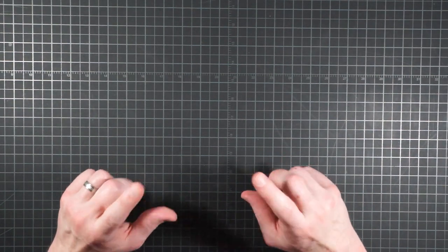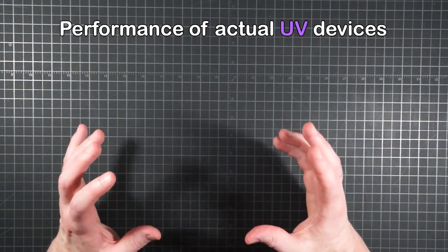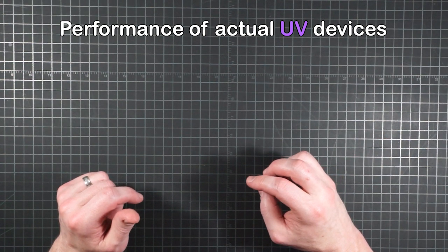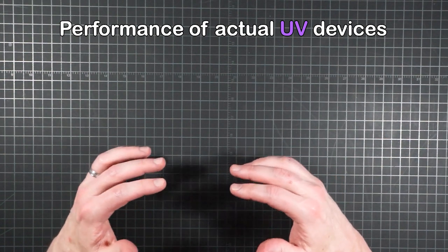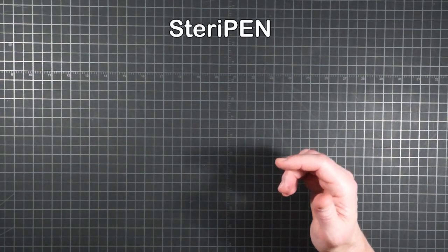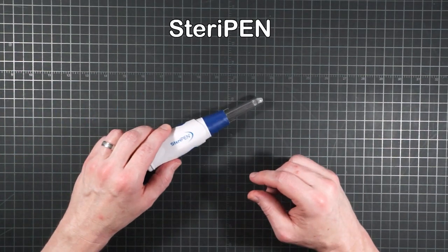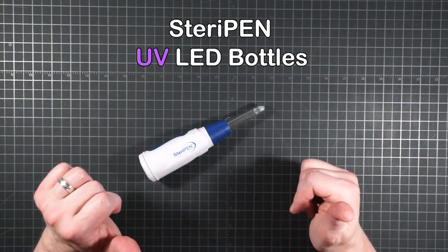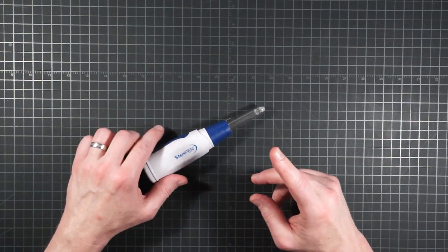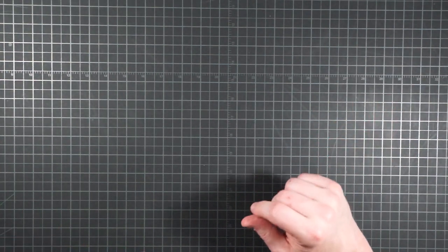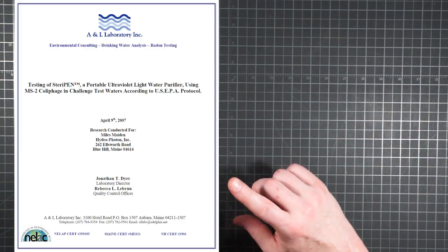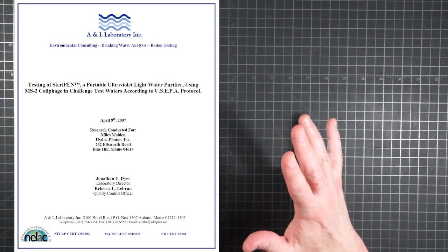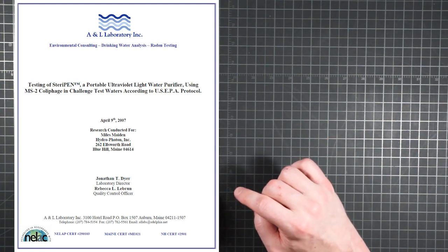Okay, enough theory already. What about the performance of actual devices? Well, as far as products available and practical for the backcountry, there's really only one that I'm aware of at this time. Katadyn's aforementioned SteriPen. Though I did look at a couple of UV LED bottles to be discussed at the end. Regarding performance, you know me by now, I want lab tests. This report from A&L Labs tested the SteriPen against MS2 coliphage according to the EPA's protocols.